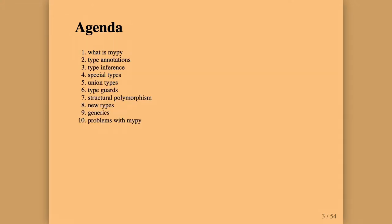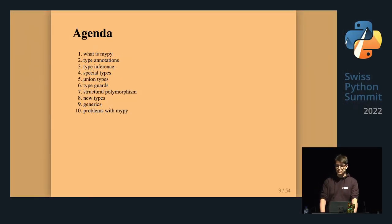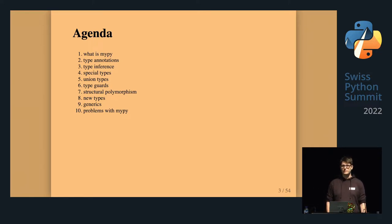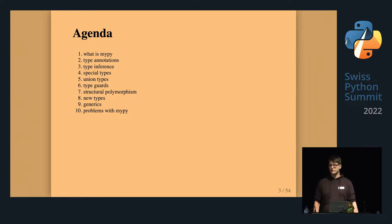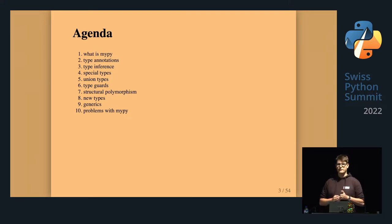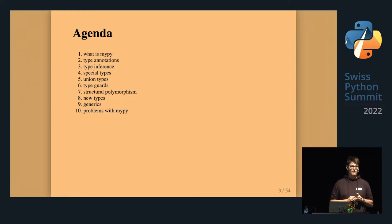We'll start briefly with what mypy itself is, then go through type annotations, type inference, some special types mypy has, union types, guard types, structural polymorphism, new types, generics, and finally what problems you can encounter while using mypy in your projects.